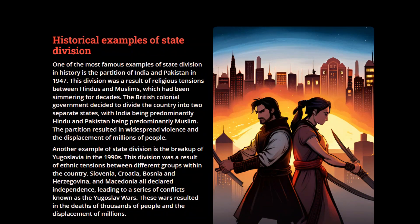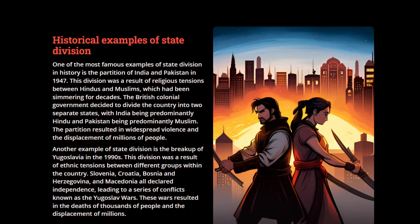Another example of state division is the breakup of Yugoslavia in the 1990s. The division was a result of ethnic tensions between different communities and groups within the country. Slovenia, Croatia, Bosnia and Herzegovina, and Macedonia all declared independence, leading to a series of conflicts also known as the Yugoslav wars. These wars resulted in the deaths of thousands of people and the displacement of millions.